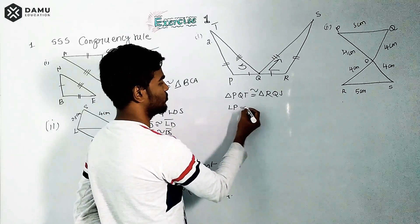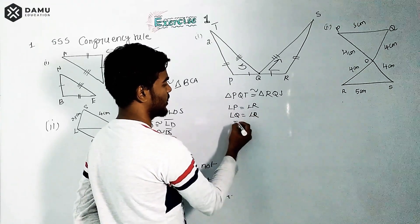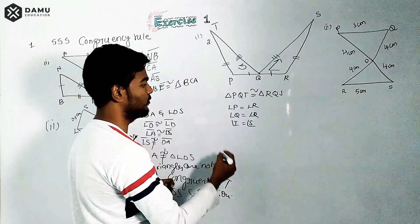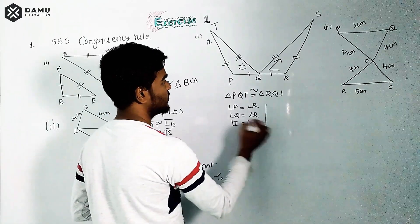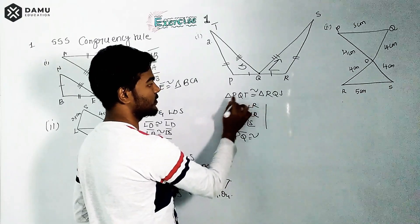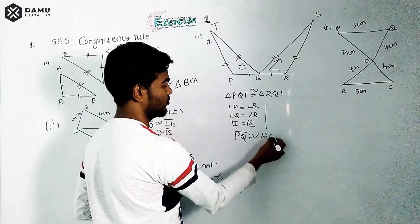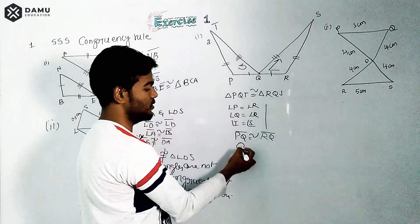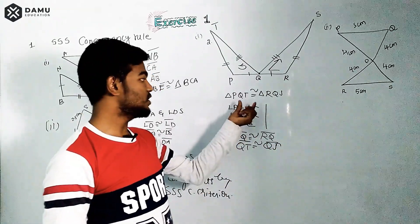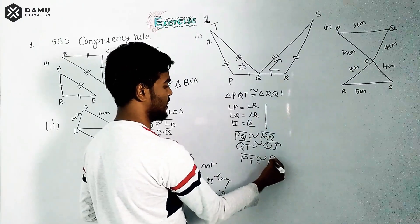Once the congruency is established, you can write the corresponding angles: angle P equals angle R, angle Q equals angle Q, and angle T equals angle S. For the corresponding sides: PQ is congruent to RQ, QT is congruent to QS, and PT is congruent to RS — matching first and last letters of each triangle's vertex sequence.